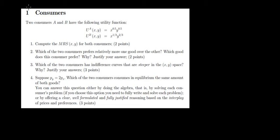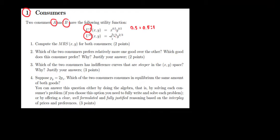Let's have a look at question 1. We have two consumers A and B with the following utility functions. What we can notice is that the utility function in both cases is a Cobb-Douglas function — we have a multiplication of products and the exponents together make up 1. For consumer A, 0.5 plus 0.5 equals 1, and for consumer B, 1/3 plus 2/3 equals 3/3, which is also 1. So we have a Cobb-Douglas function in both cases.